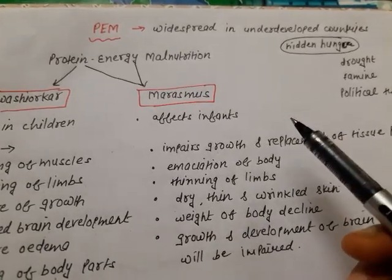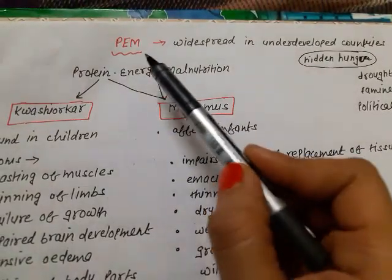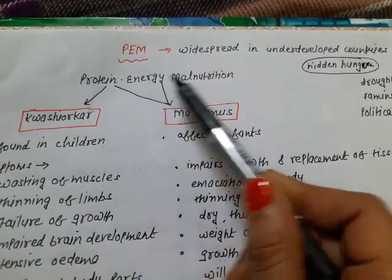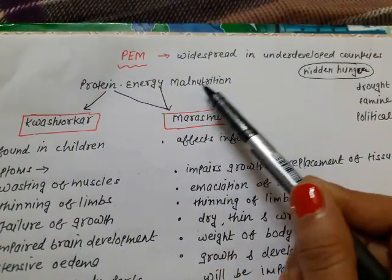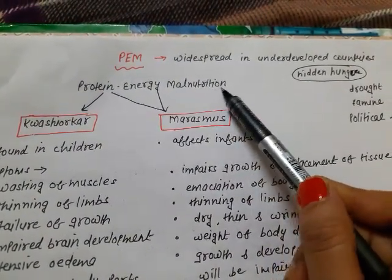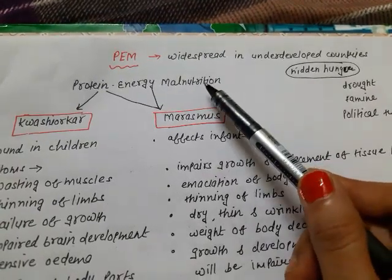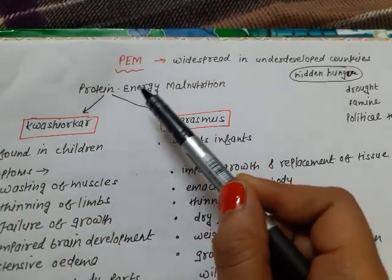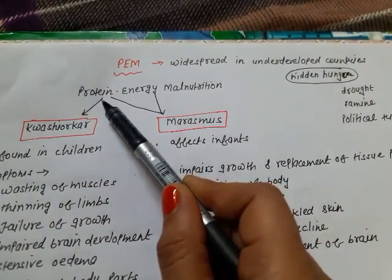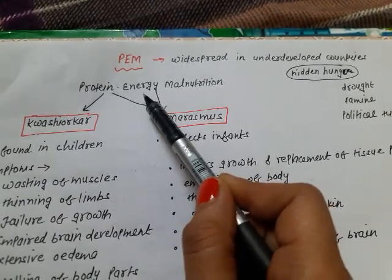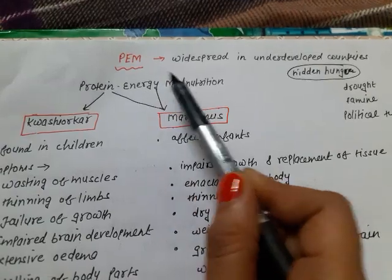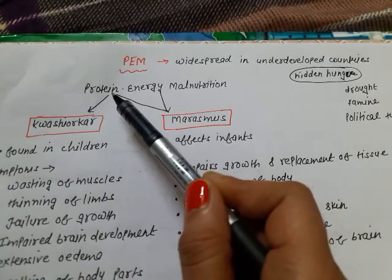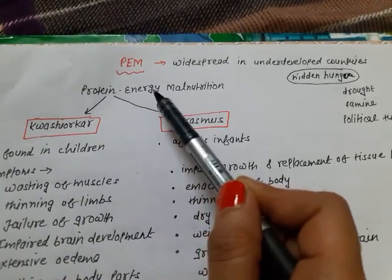Hello students, today we will discuss about PEM, that is Protein Energy Malnutrition. Malnutrition means lack of sufficient nutrients in the body. PEM refers to the dietary deficiency of protein as well as calories, which we refer to as energy. We are taking our diet, but that diet is protein as well as calorie deficient.